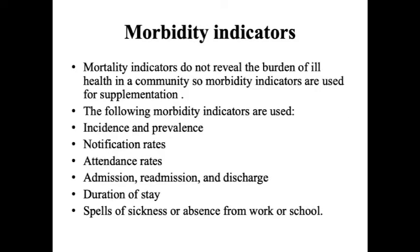Mortality indicators do not reveal the full burden of ill health in the community, so we require morbidity indicators to supplement health status assessment. We use incidence and prevalence — incidence is the number of new cases, and prevalence is the total number of cases including new and old. Other morbidity indicators include notification rates from hospitals, OPD attendance rates, specific OPD and IPD attendance rates, admissions, readmissions, discharges, duration of hospital stay, and absence from work or school due to illness.